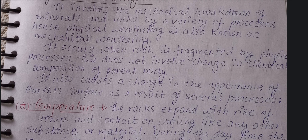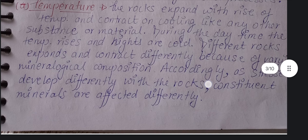To summarize, physical weathering is the mechanical breakdown of minerals and rocks by a variety of processes. It is driven by physical processes resulting in disintegration of the rock. There is no chemical change involved — only physical processes — which is what makes it physical weathering.